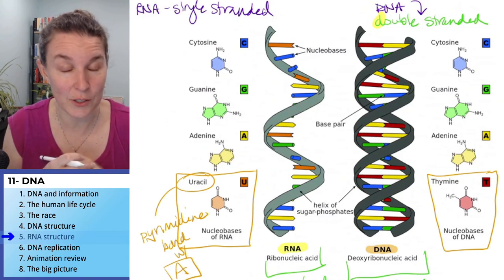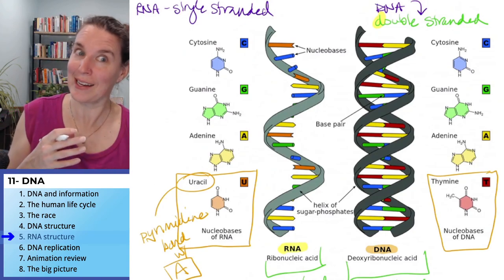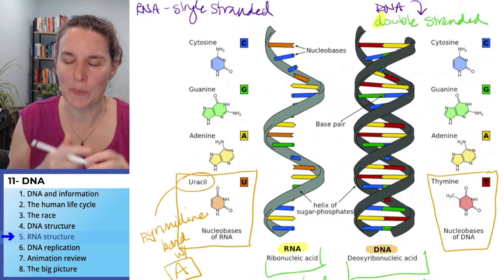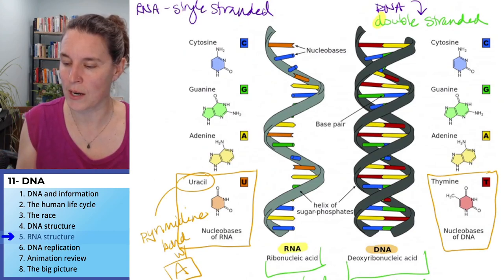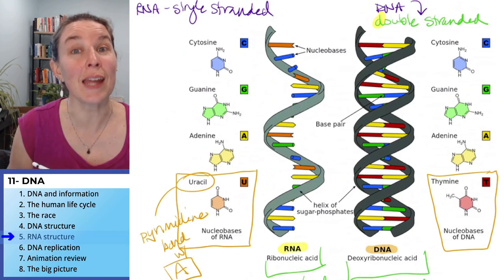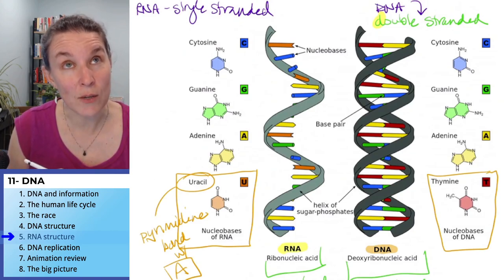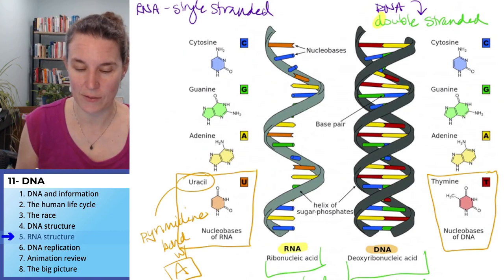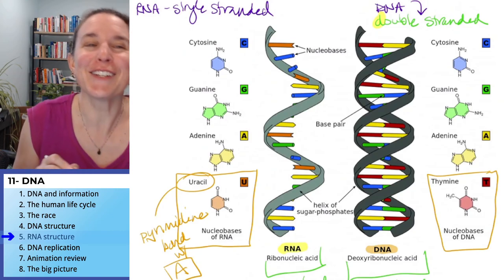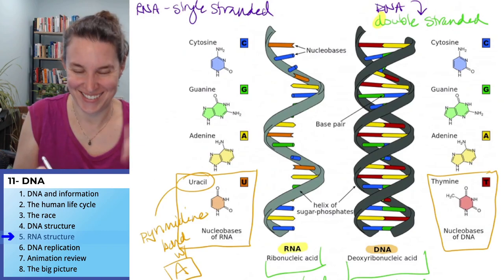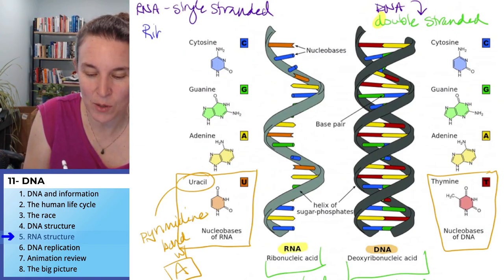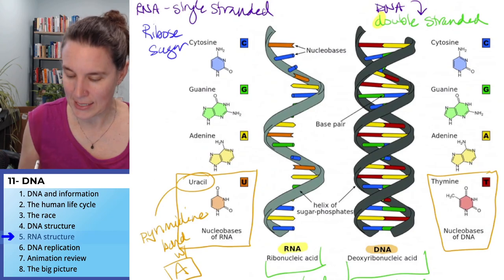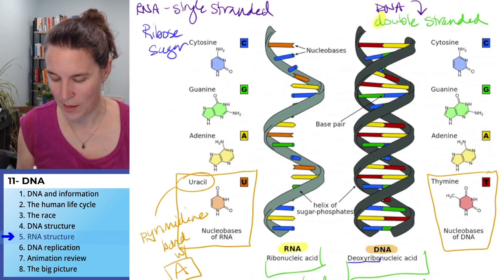There is no thymine in RNA. If you see a uracil, you know you're looking at RNA, because DNA doesn't have uracil. There's one more significant difference between RNA and DNA, and it has to do with the name — deoxyribo and ribo. RNA is made with ribose sugar, so our pentose sugar is ribose in RNA. And in DNA, we already said it was deoxyribose.